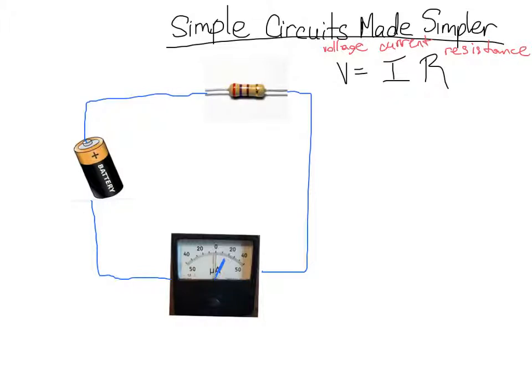So we have voltage equals current times resistance. So, for example, if this were a 3-volt battery and our ammeter, we only wanted, let's say, 0.5 amps to reach the ammeter, then in order to figure out what size resistor we would need here, we could plug into what is called Ohm's Law. So this is actually called Ohm's Law.